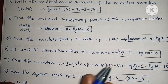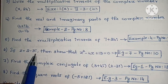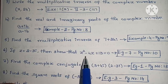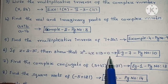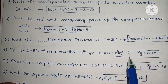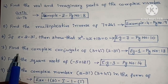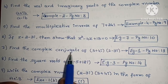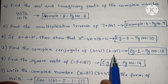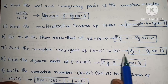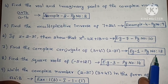If z equals 2 minus 3i, then show that z squared minus 4z plus 13 equals 0. Example 7, page number 10. Next, find the complex conjugate of (3 + 4i)(2 - 3i). Example 1, page number 13.